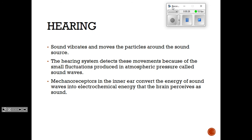Hearing happens when sound vibrates and moves the particles around the sound source. Right now I'm the sound source and the particles are vibrating and moving around me. Your hearing system detects these movements because there are little fluctuations in atmospheric pressure called sound waves, and you have in your inner ear mechanoreceptors — the ones that detect movement and physical stimuli.